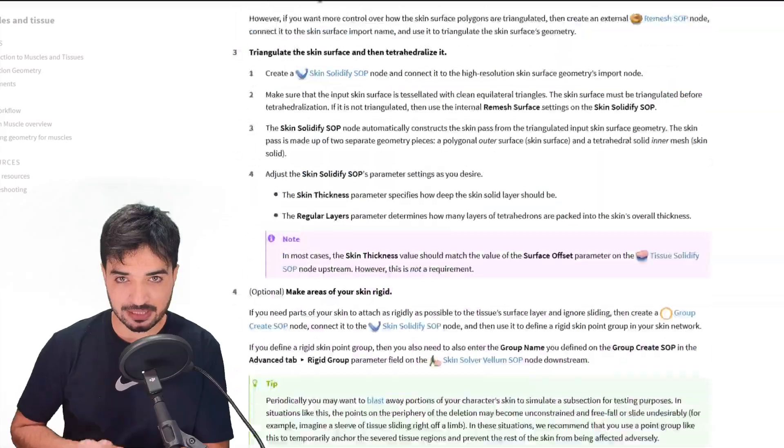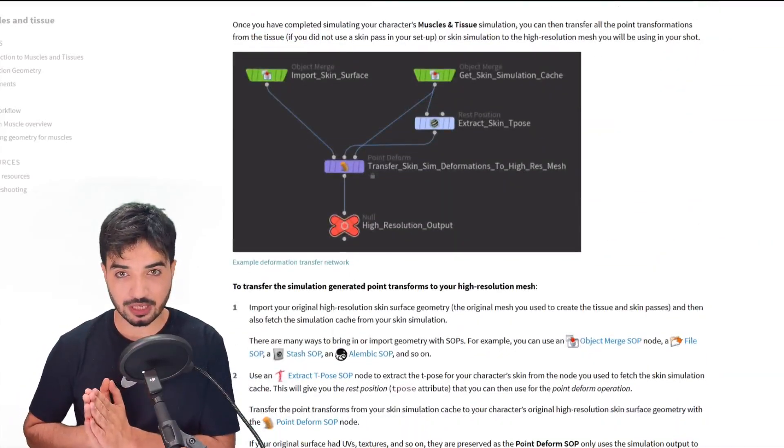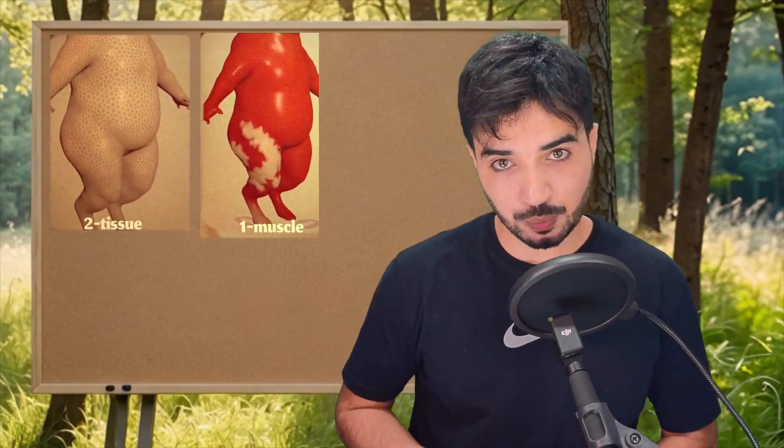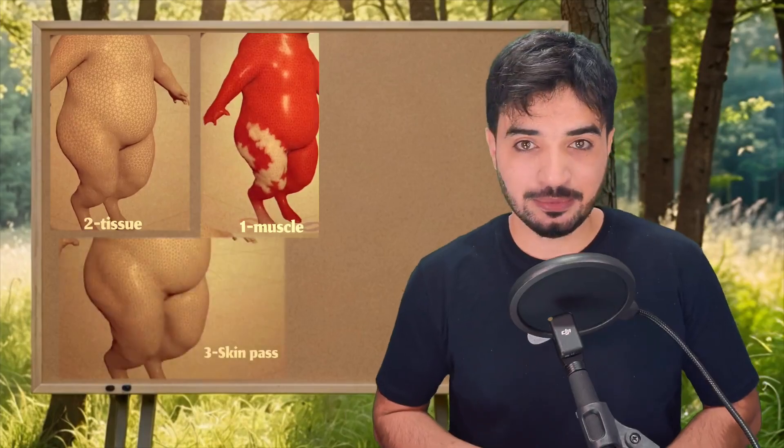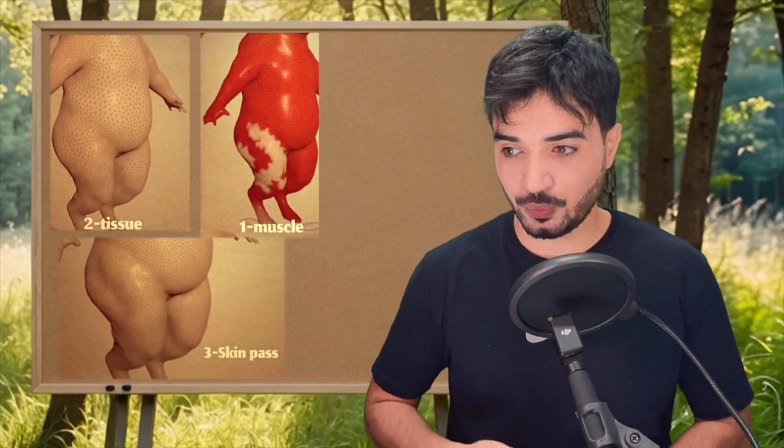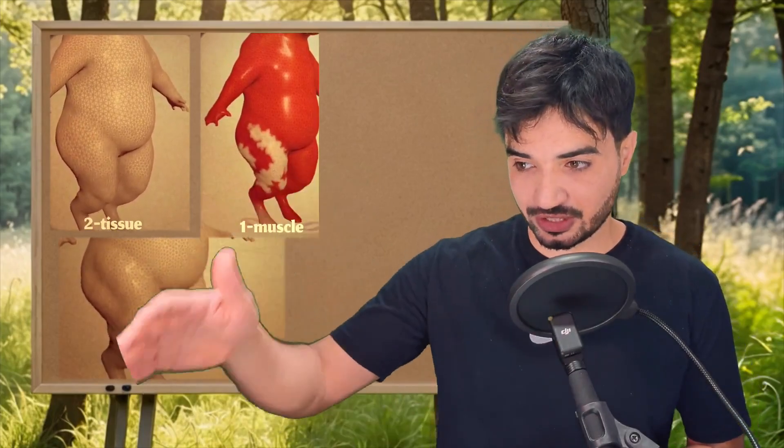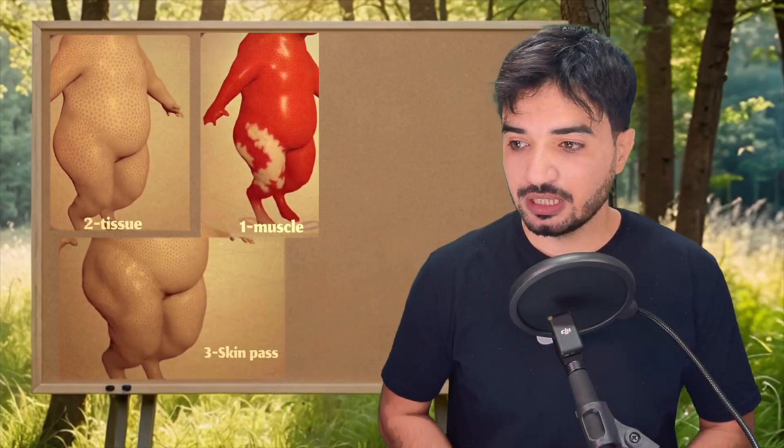As we said, we need three passes or three-phase operations. First is the muscle pass, then we have the tissue pass, and then the skin pass. We need to deal with all three passes if you want a decent muscle system in your character.